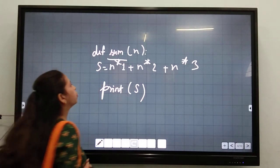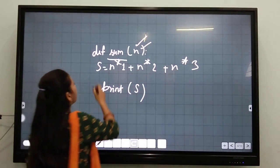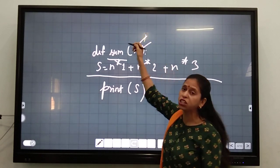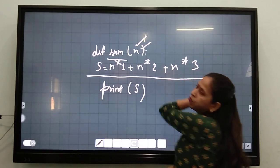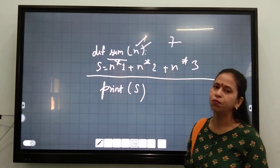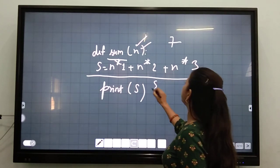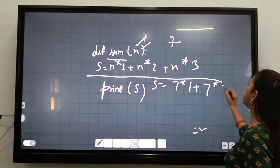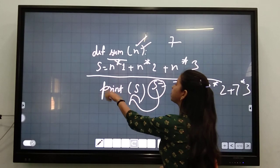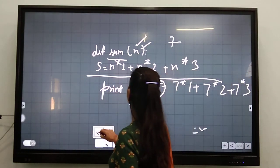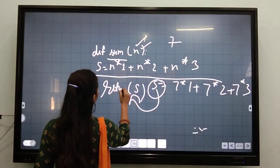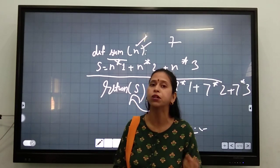Let's take an example: a sum function where we pass a parameter n. x is the number of iterations you give at runtime, so the values will evaluate one by one. Suppose n equals 7, then the passing values would be 7×1 + 7×2 + 7×3, and so on. This result is stored in S. We write return S instead of print S, because in a function, return is required for output, just as print is required for general output.